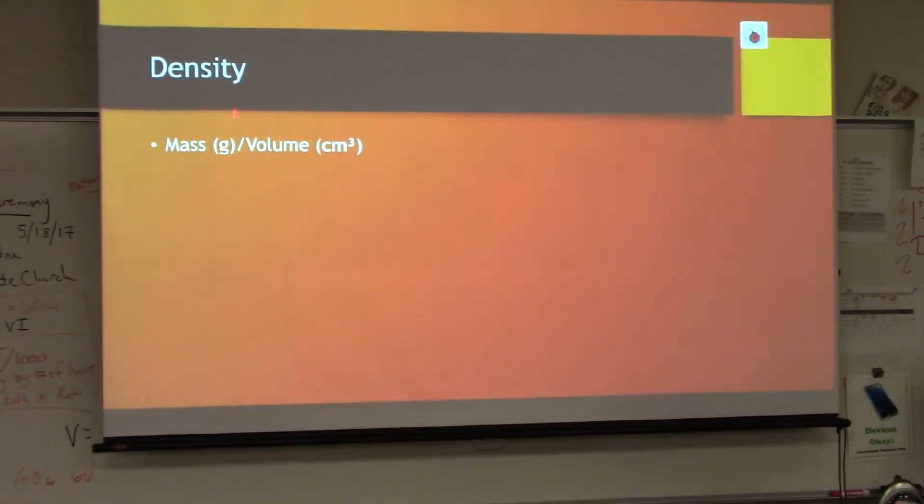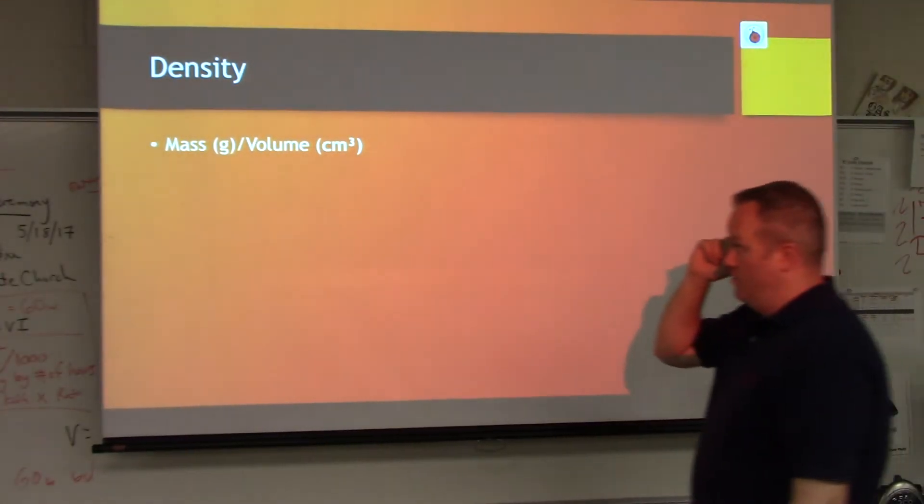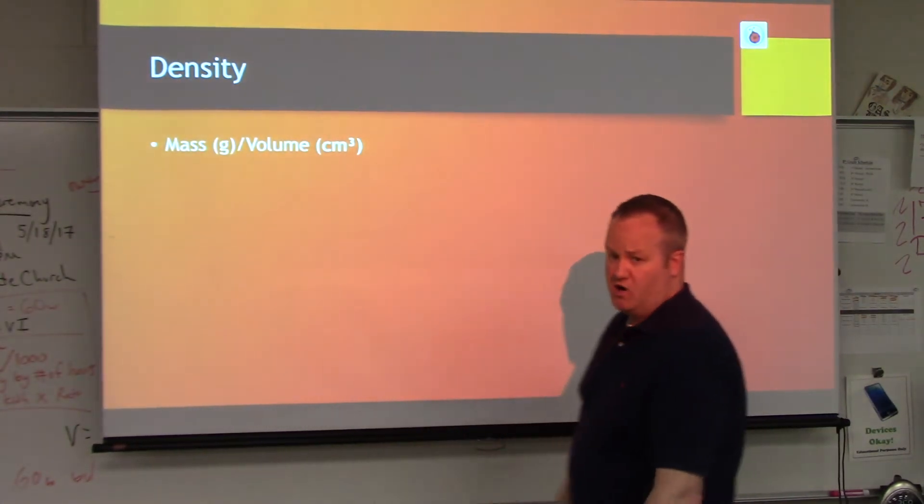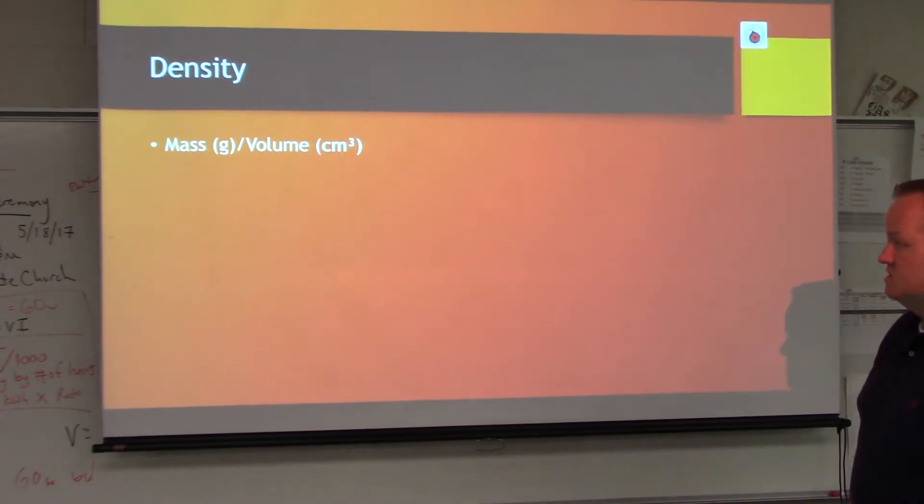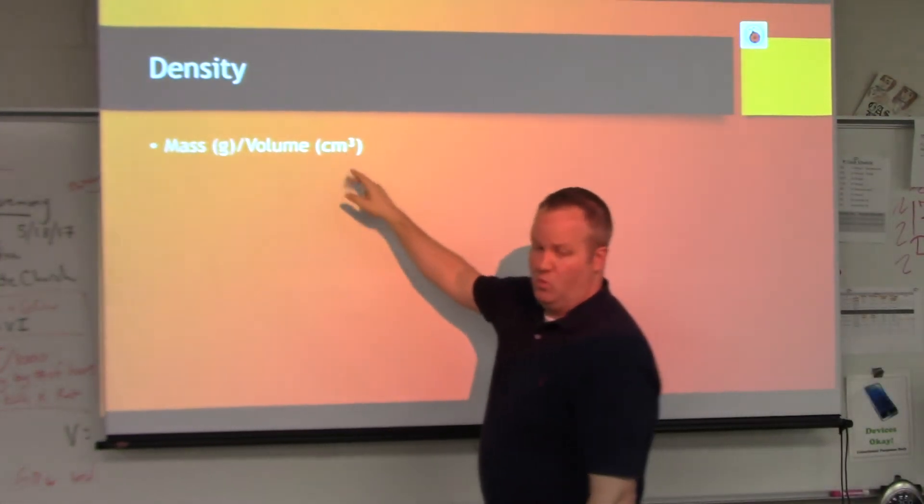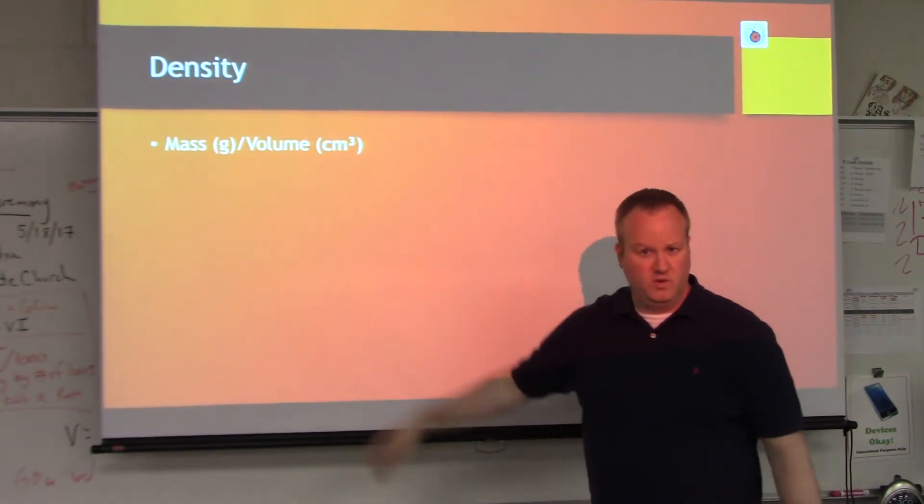Remember that density is mass over volume. We can use grams and cubic centimeters for our units for those two measurements. Remember that we could also list milliliters here, and 1 milliliter is equivalent to a cubic centimeter.